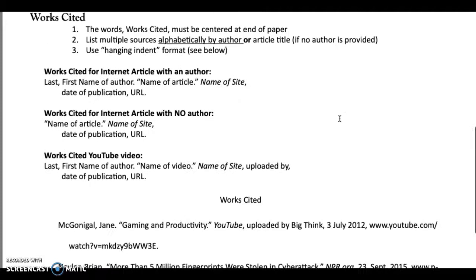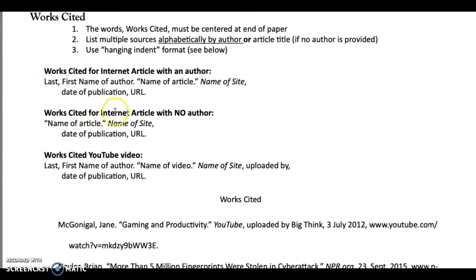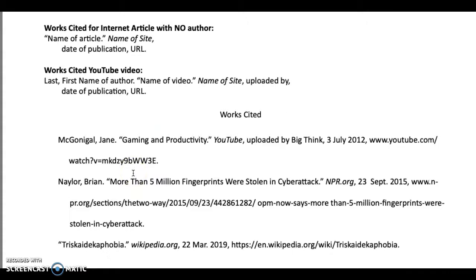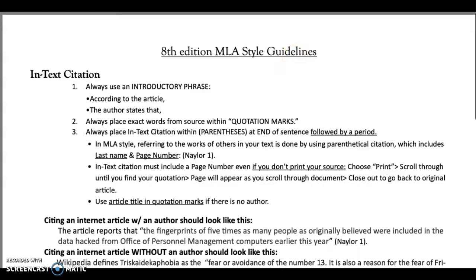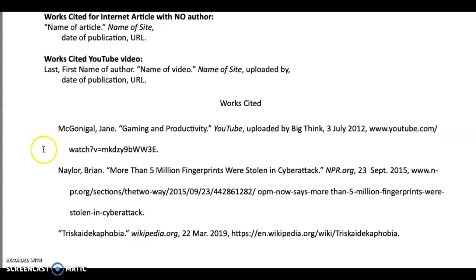And then the works cited. Here's an example of a works cited internet article with an author. Works cited internet article without an author. YouTube videos. Those are probably the primary things you're going to use. If you do use the CCRI database, it's all done for you and you can just copy and paste it, which is nice. That's a good reason to use the CCRI database. Here are your examples: a works cited for a YouTube, a works cited for an internet article with an author, and a works cited for an internet article with no author.